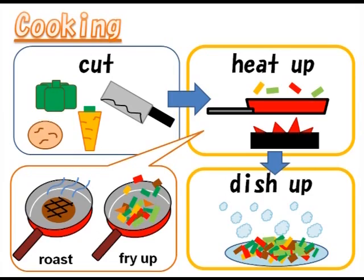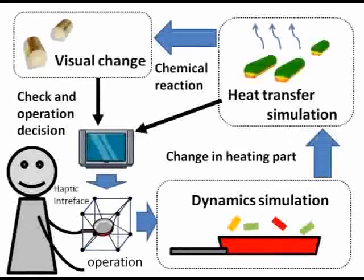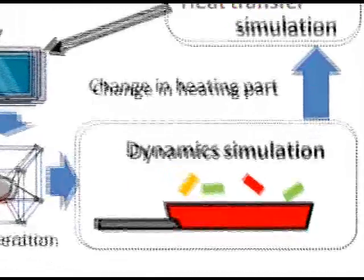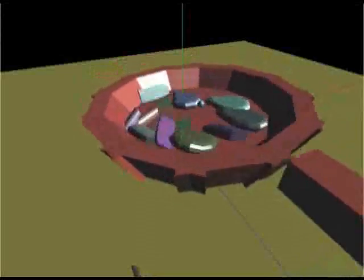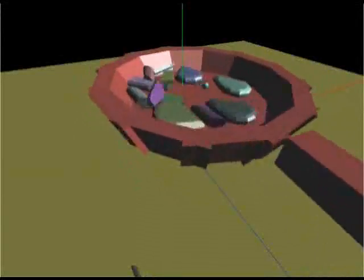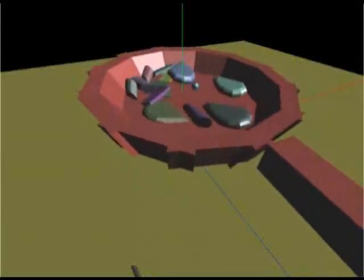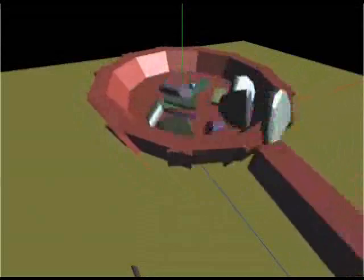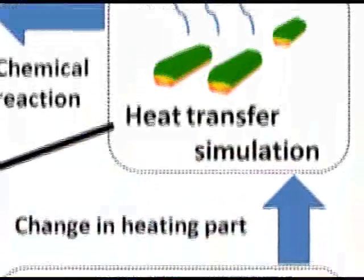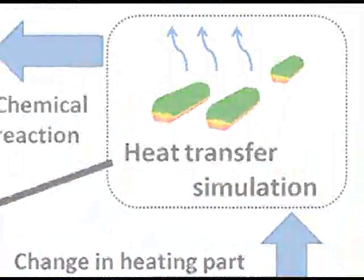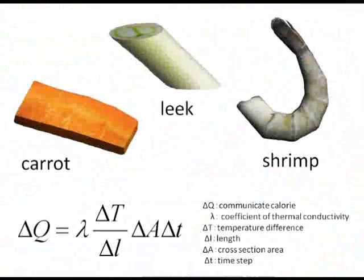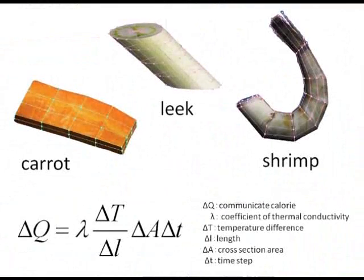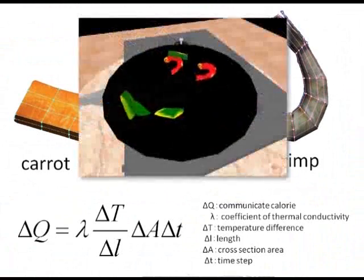The system simulates several core elements. Food ingredients are represented as 3D mesh models. With dynamic simulation, the system can simulate movements of ingredients in the frying pan. The heat spread is simulated as heat transfer between neighboring nodes of the mesh model.